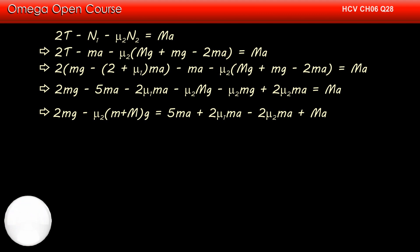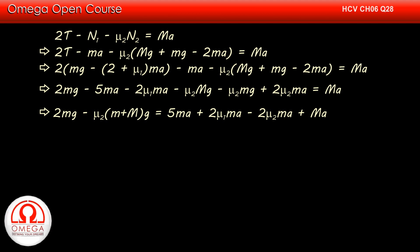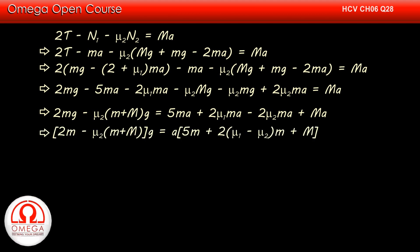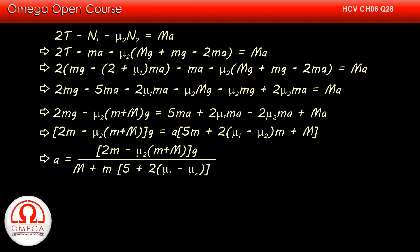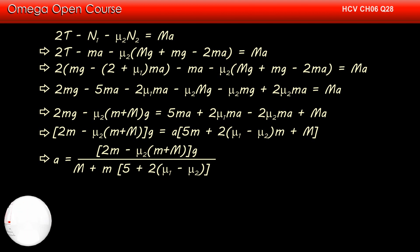Bringing all terms with A to one side, we get 2mg − mu2·(m + M)·g = 5mA + 2·mu1·mA − 2·mu2·mA + MA. Or, 2m − mu2·(m + M) multiplied by g equals A times (5m + 2·(mu1 − mu2)·m + M). This implies A = [2m − mu2·(m + M)]·g divided by [M + m·(5 + 2·(mu1 − mu2))]. This is our answer.